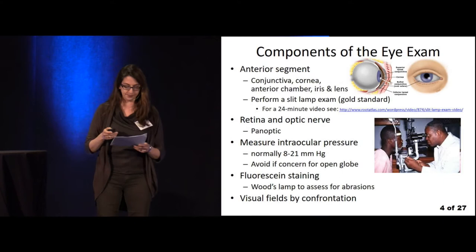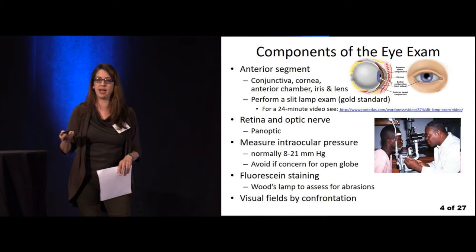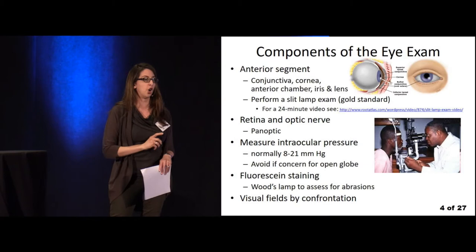You want to measure intraocular pressure. Normal intraocular pressure is about 8 to 21 — just remember roughly 10 to 20. You can use a tonopen, but remember: if there is an open globe injury, you want to avoid this step entirely.